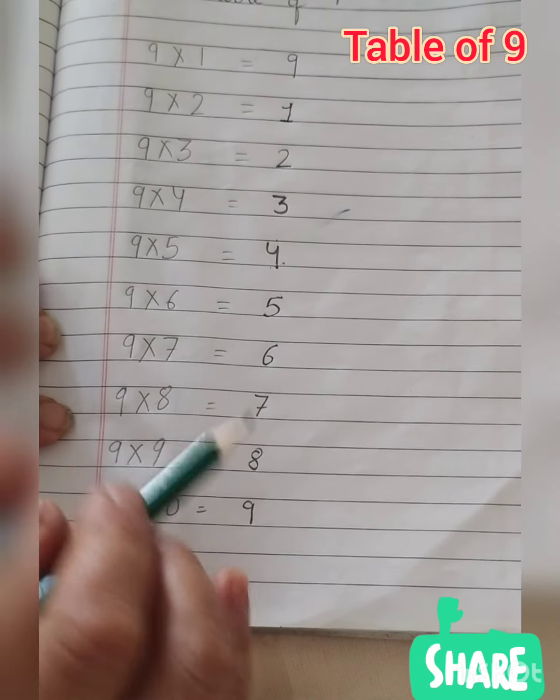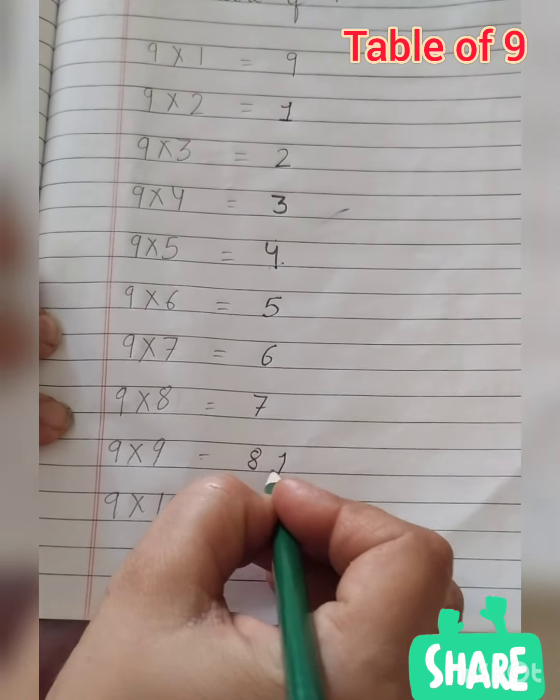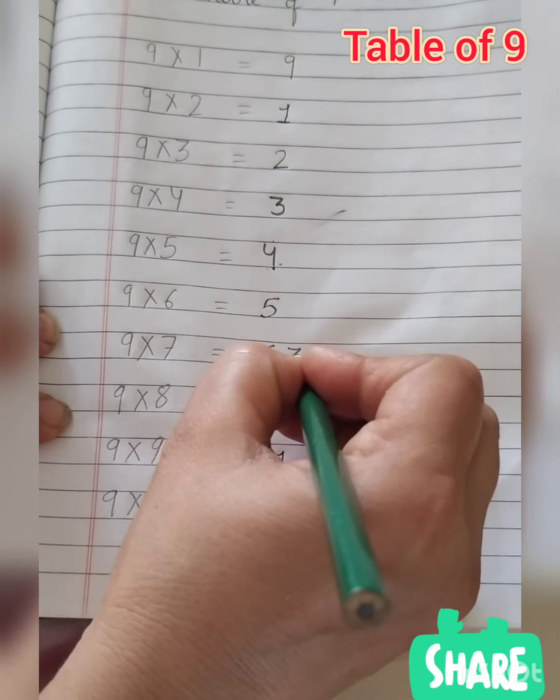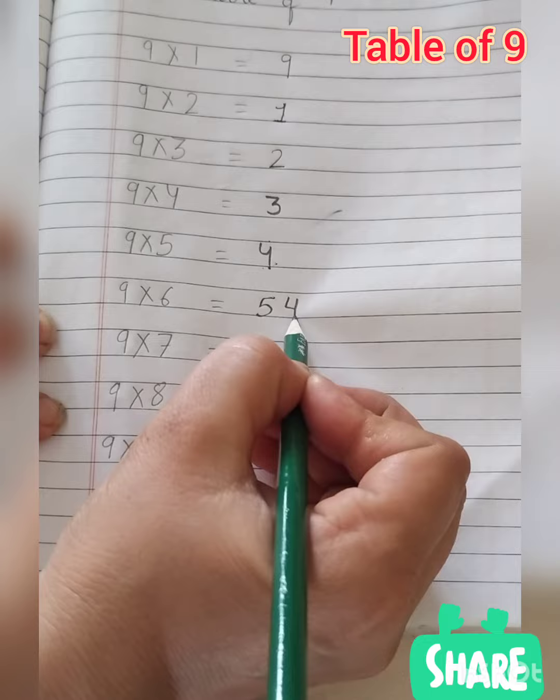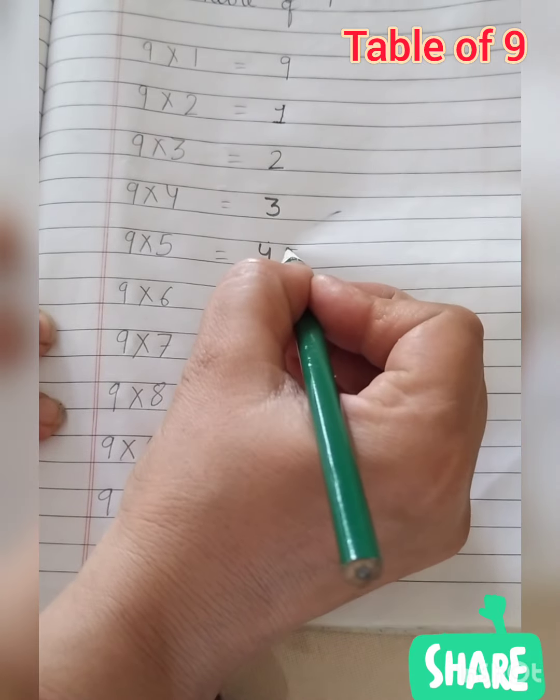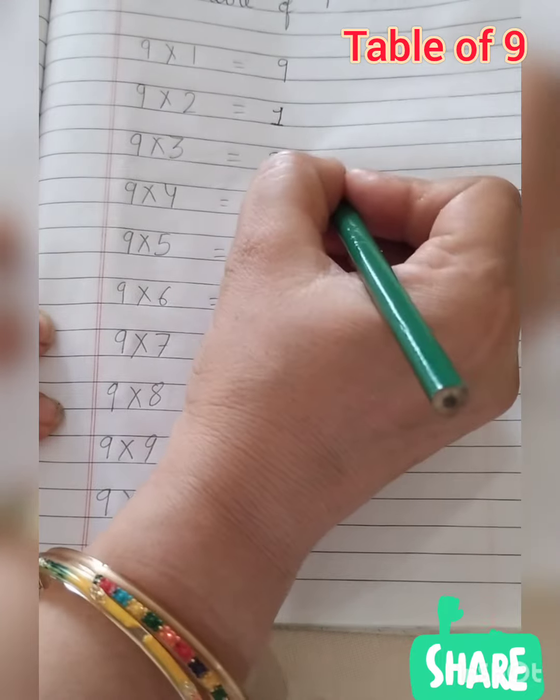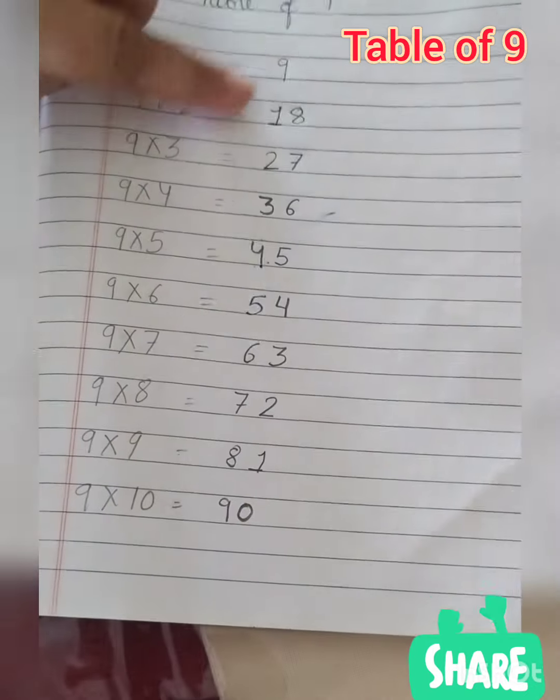Then we will start reverse counting: 0, then 1, 2, 3, then we will write 4, 5, 6, 7, 8, then 9.